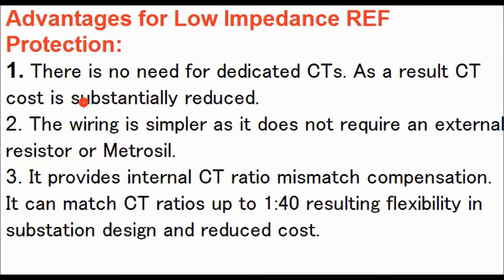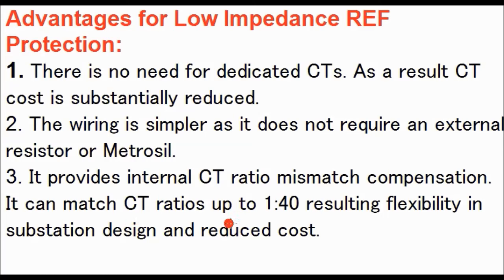The advantages of the low impedance type restricted earth fault relay are: first, no dedicated CTs are required as were needed for the high impedance type, substantially reducing CT cost. Second, the wiring diagram is very simple as it does not require any external resistance or varistor, and no resistance value calculations are needed. Third, it provides internal CT ratio mismatch compensation by the K factor, and can match CT ratios up to 1:40, resulting in flexibility in substation design and reduced cost.